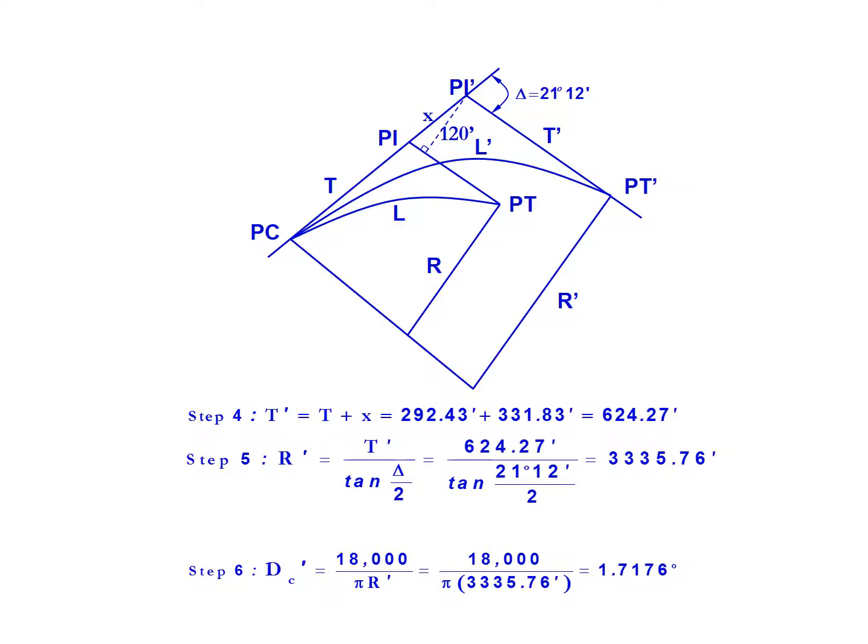With that radius we can calculate the new degree of curvature D prime. So 18,000 divided by pi times the new radius, that's 18,000 over pi times 3,335.76 feet, gives us a new degree of curve of 1.717 degrees.